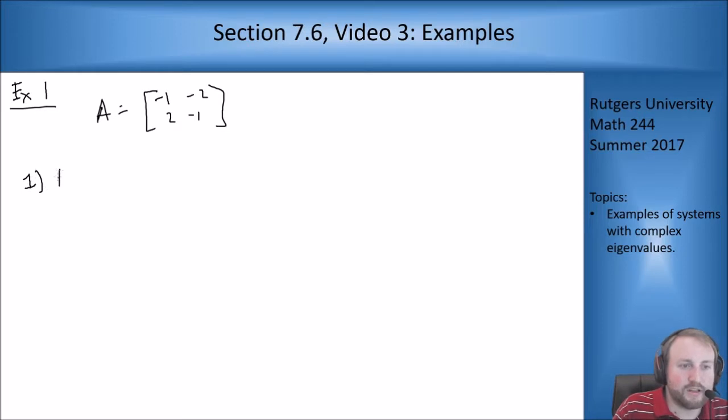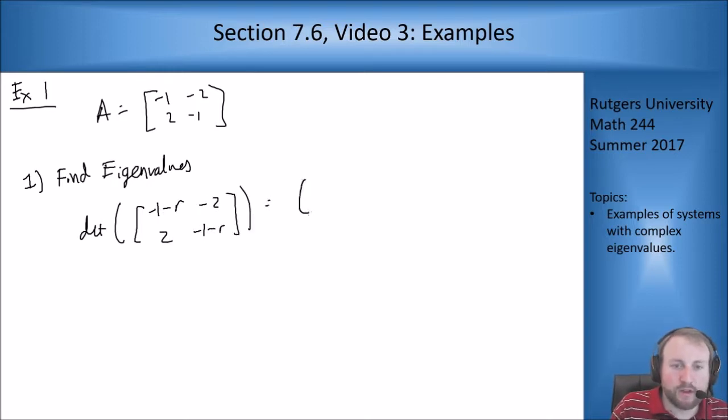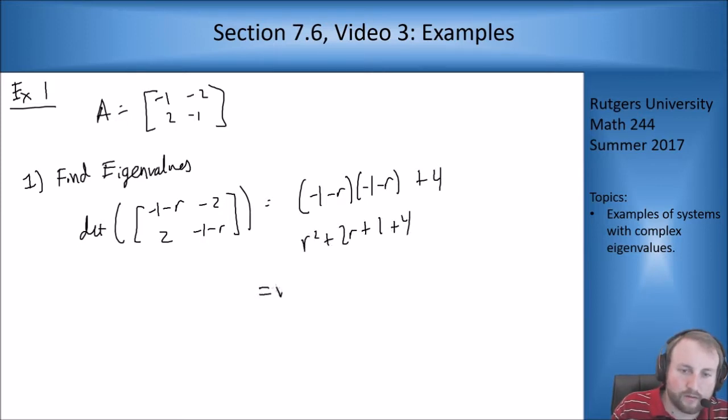So step one is find eigenvalues. So determinant, minus 1 minus r, minus 2, 2, minus 1 minus r, equals minus 1 minus r, minus 1 minus r, plus 4, which this is r squared plus 2r plus 1 plus 4, r squared plus 2r plus 5.